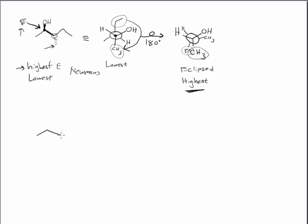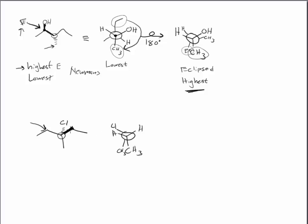Let's look at one more example of drawing a Newman projection starting with something a little different. We look down this bond again — so on the front carbon I have a methyl below, and the two hydrogens. Looking at the back carbon, I still have something in the plane of the page below the arrow, so immediately I'm drawing an eclipsed version. Up and to the left is the chlorine — that's the dash — and up and to the right is the ethyl.